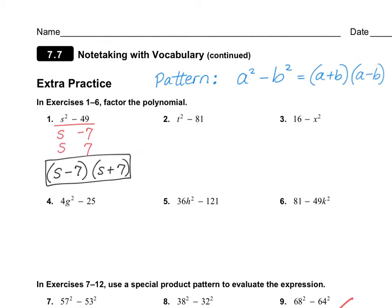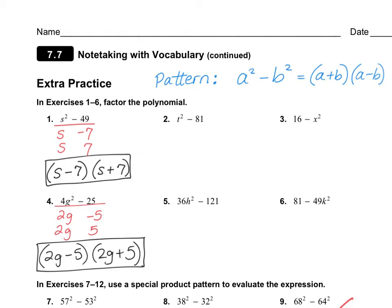Let's take a look at number 4. We have 4g squared, so that would be 2g multiplied by 2g, and then 25 is negative 5 and positive 5. Cross-multiplying adds up to 0, so the answer is 2g minus 5 and 2g plus 5. For number 6, 81 is 9 times 9, and 49k squared gives negative 7k and positive 7k. So the answer is 9 minus 7k and 9 plus 7k.